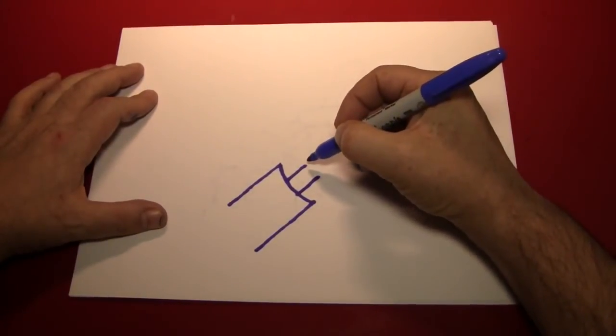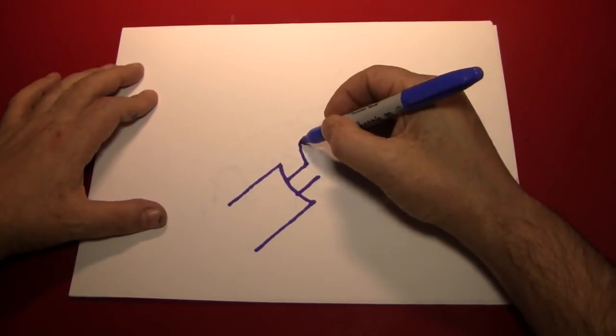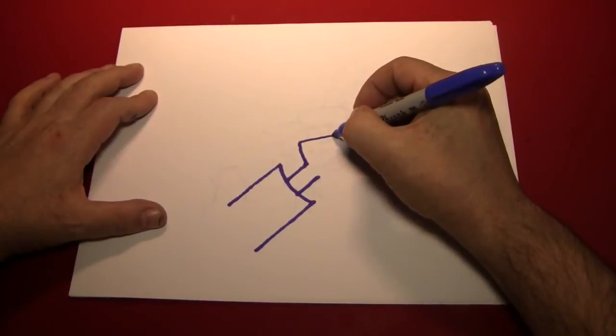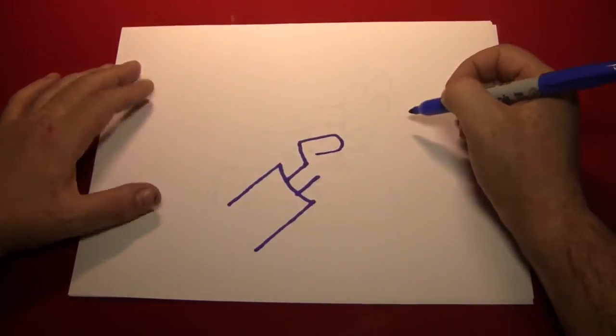And then, let's make the thumb. In the peace sign, the thumb kind of comes up like that, as you can see.